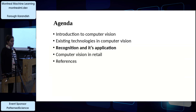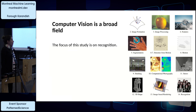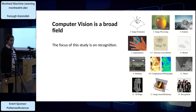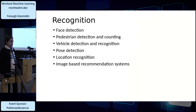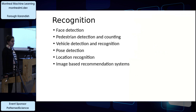Now moving to recognition and its applications. Computer vision is a very broad field, classified into different categories such as image formation, image processing, features, and motion. Today's focus is on recognition, which is divided into face detection, pedestrian detection and counting, vehicle detection and recognition, pose detection, location recognition, and image-based recommendation systems.